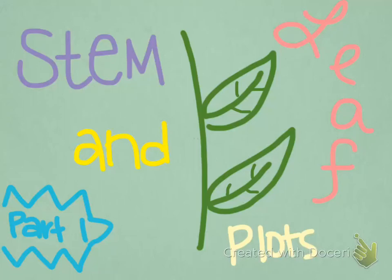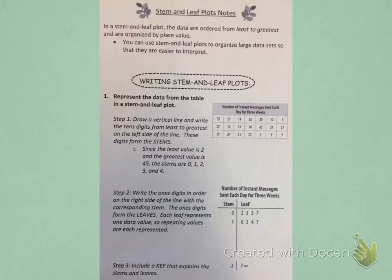Stem and leaf plots, part one. In a stem and leaf plot, the data are ordered from least to greatest and are organized by place value. You can use stem and leaf plots to organize large data sets so that they are easier to interpret.